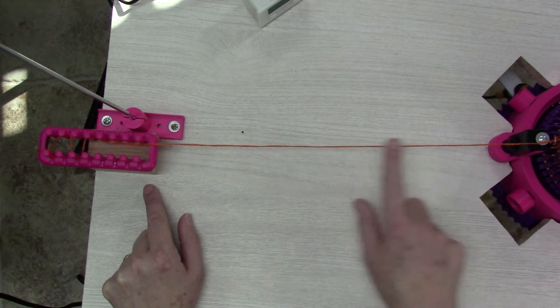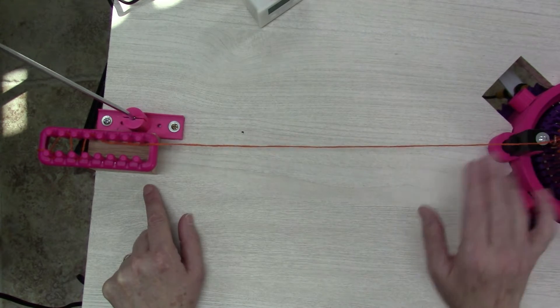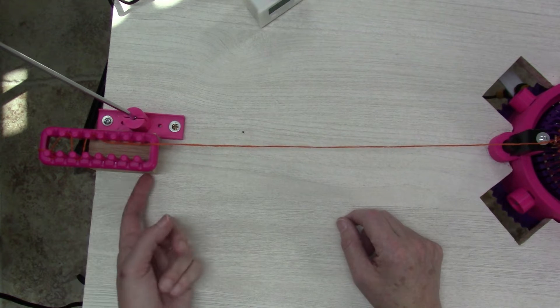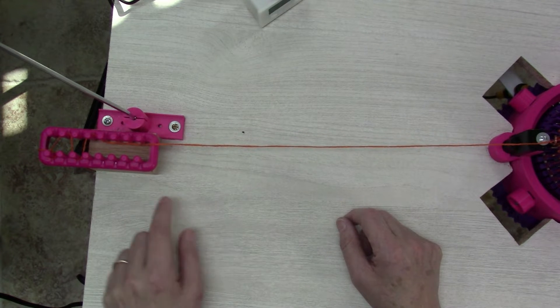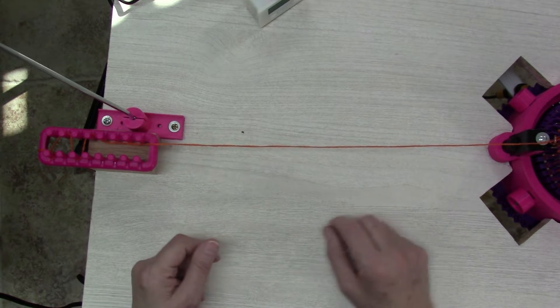I wanted to raise it up so it'd be a little bit more level with my yarn carrier over here. And then I've got that block of wood stuck down to my table with double-sided tape.